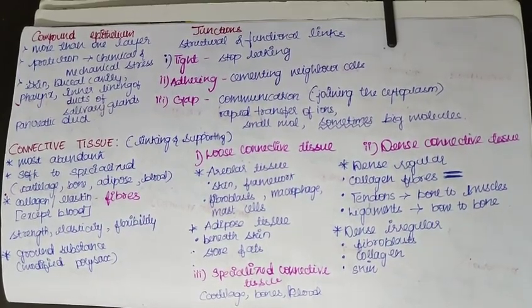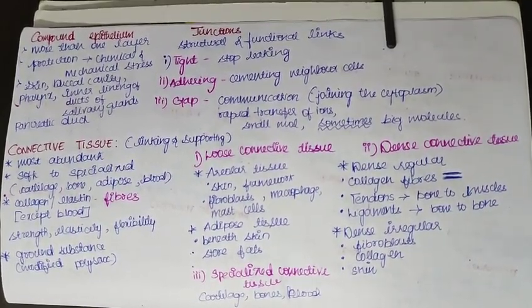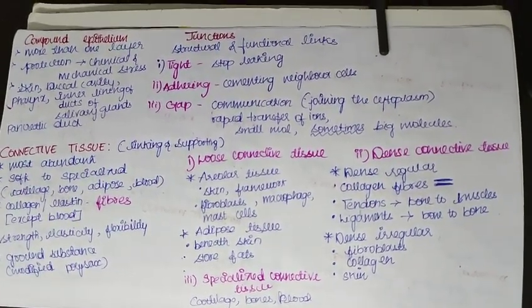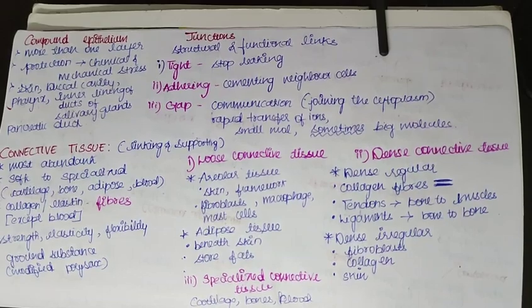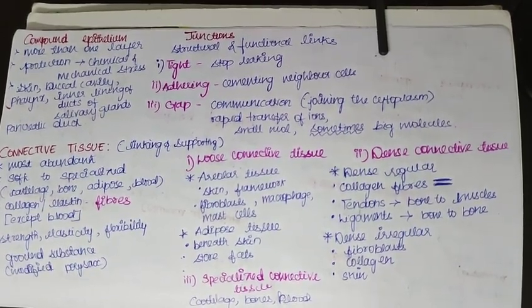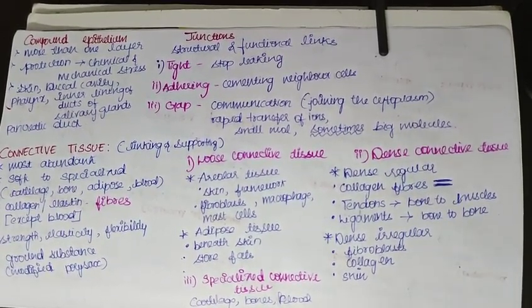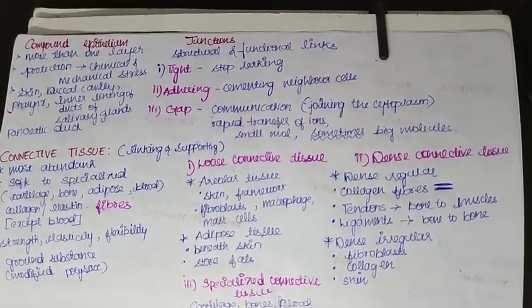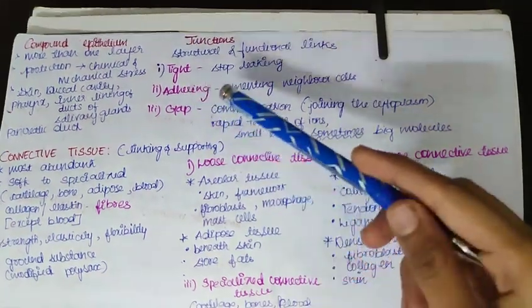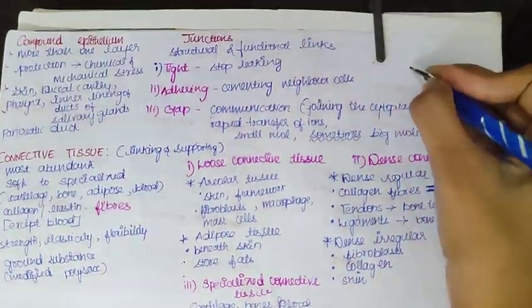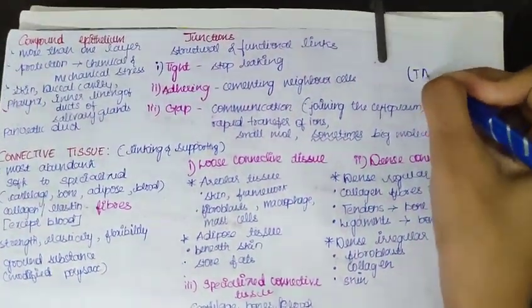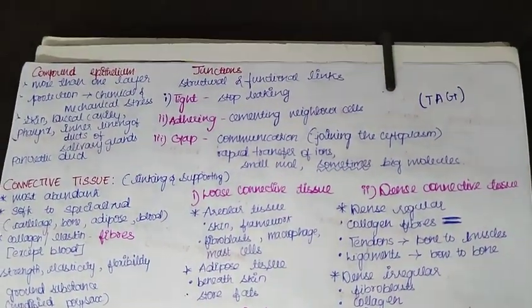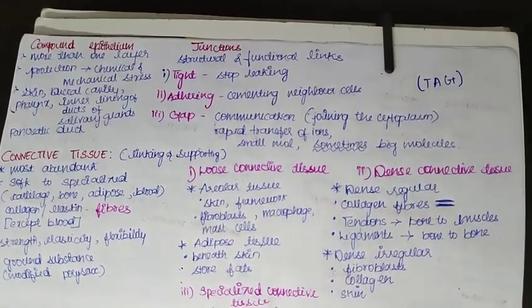Now we have discussed the types of epithelial tissue — simple and compound. Now we will talk about something called junctions. These junctions are between the cells and act as structural and functional links between different epithelial cells. They have three types: tight, adhering, and gap. You can remember the word TAG — T for tight, A for adhering, and G for gap.